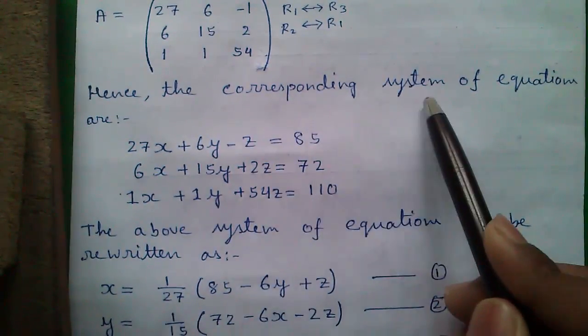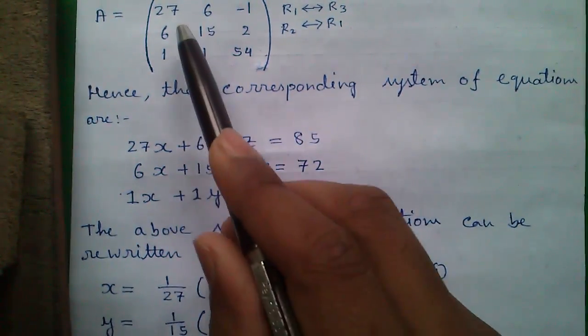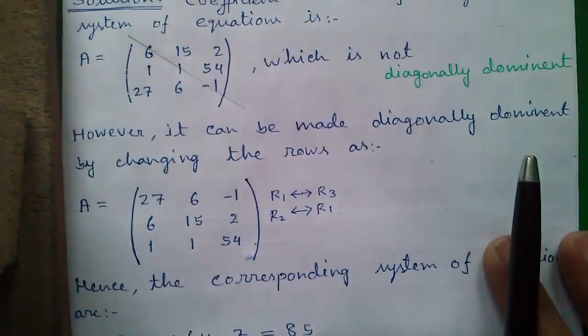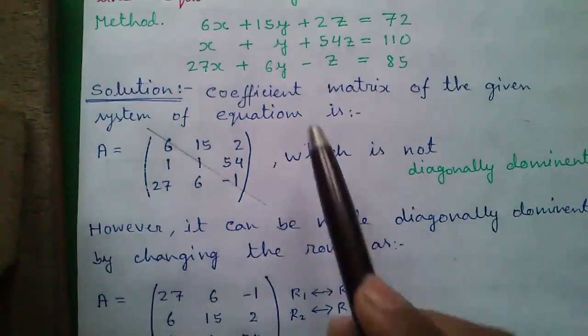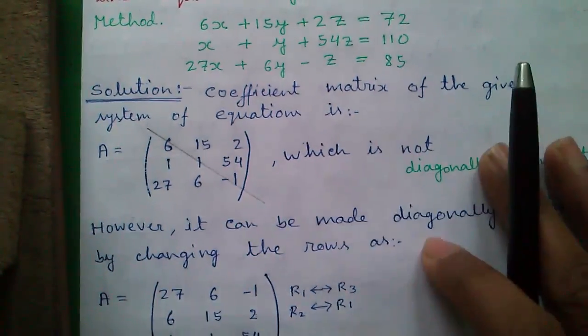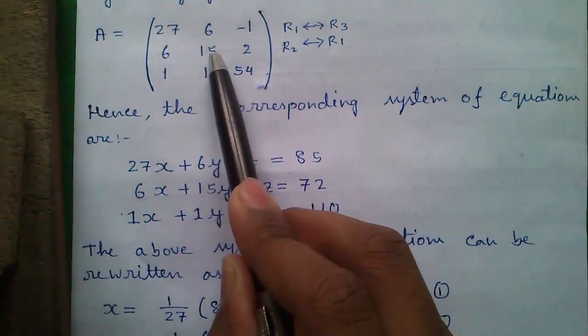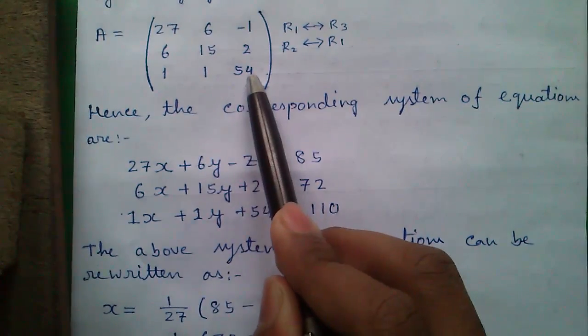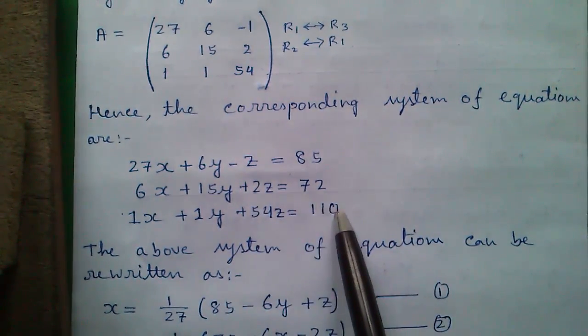Hence the corresponding system of equations are 27x plus 6y minus z equals to 85, 6x plus 15y plus 2z equals to 72, and 1x plus 1y plus 54z equals to 110.